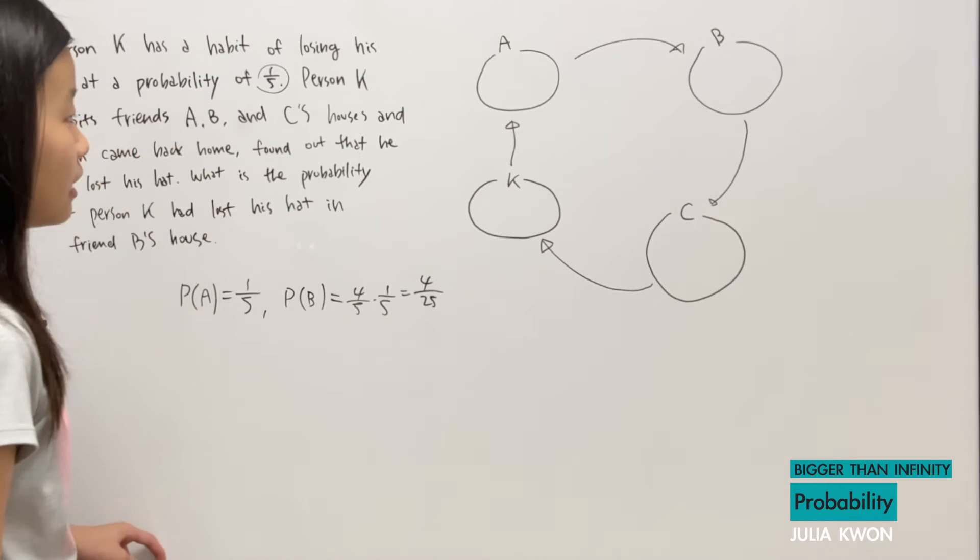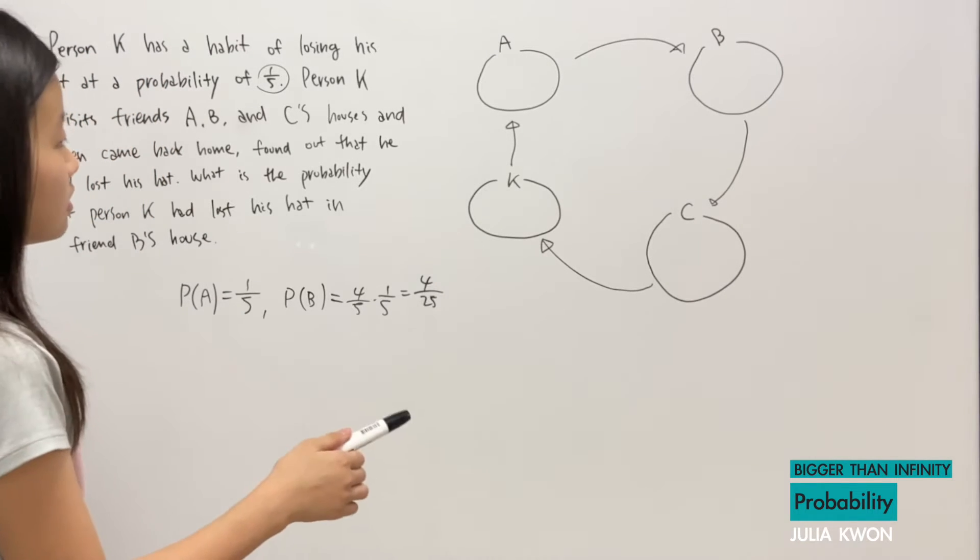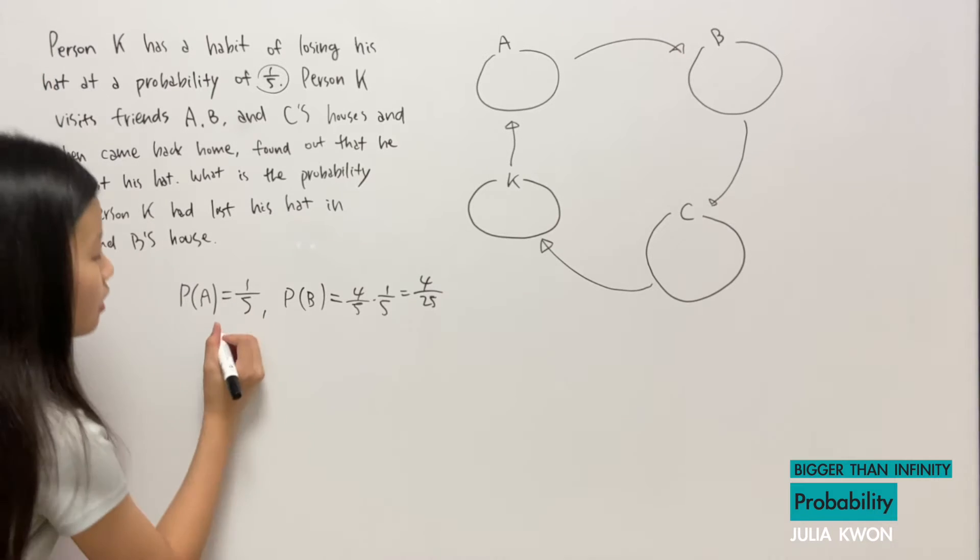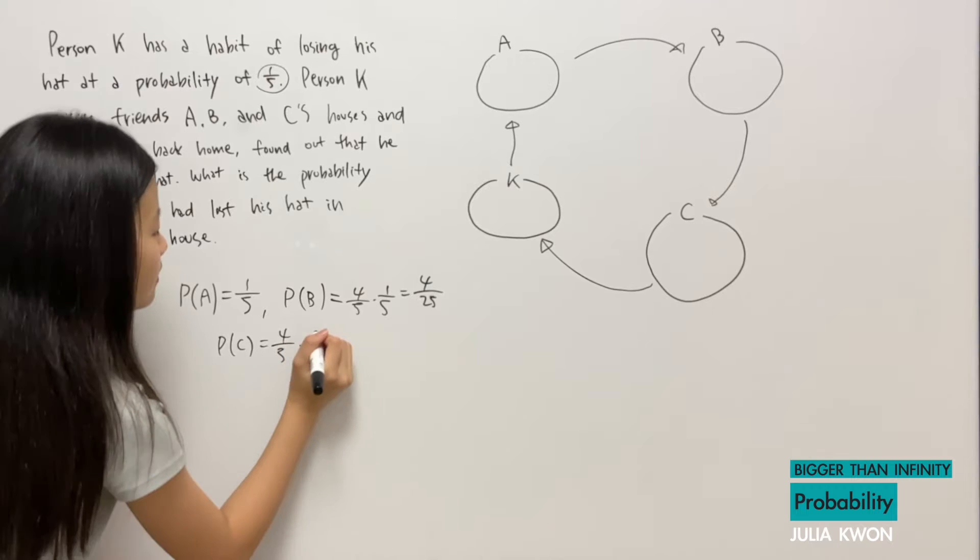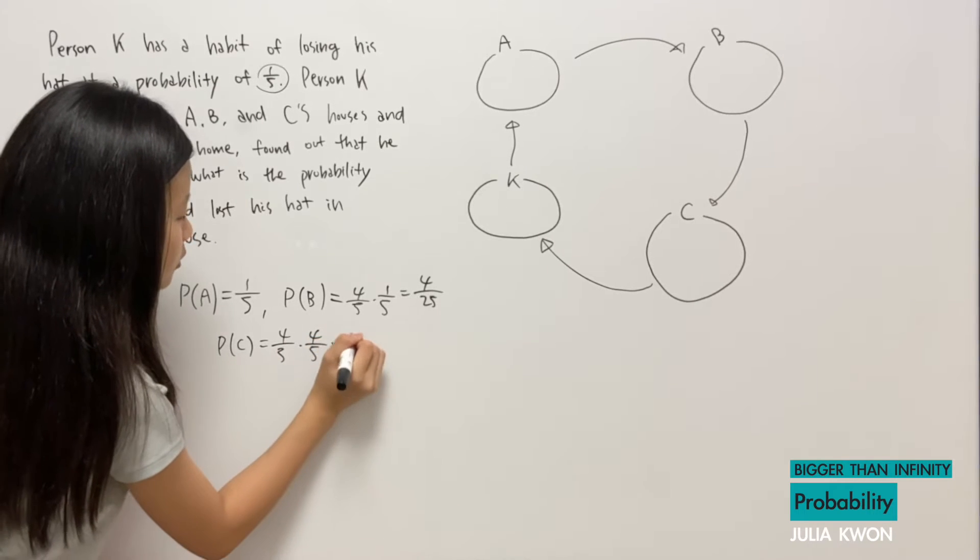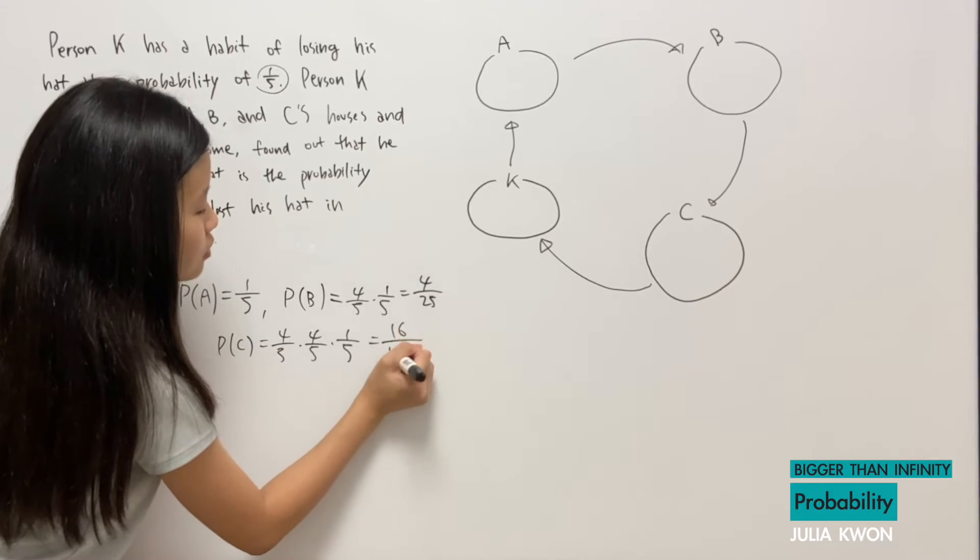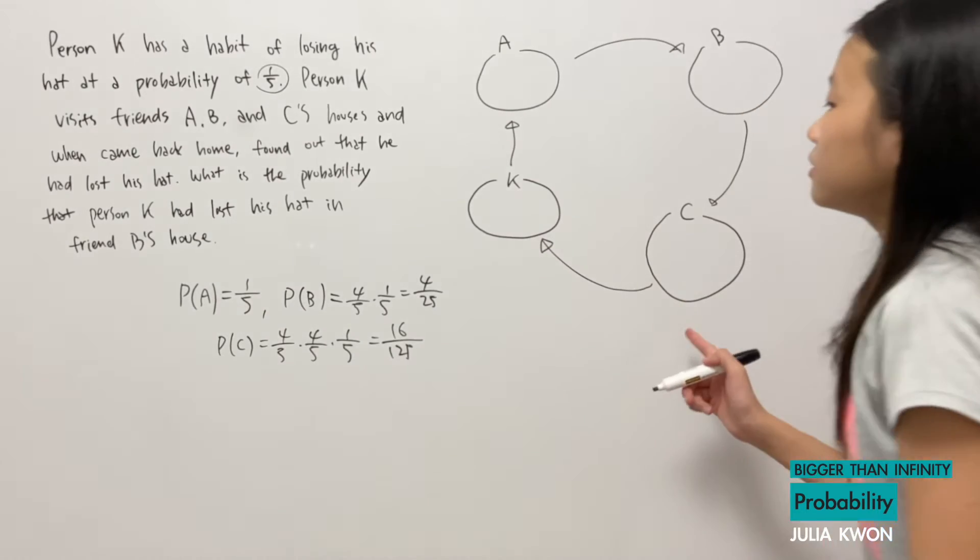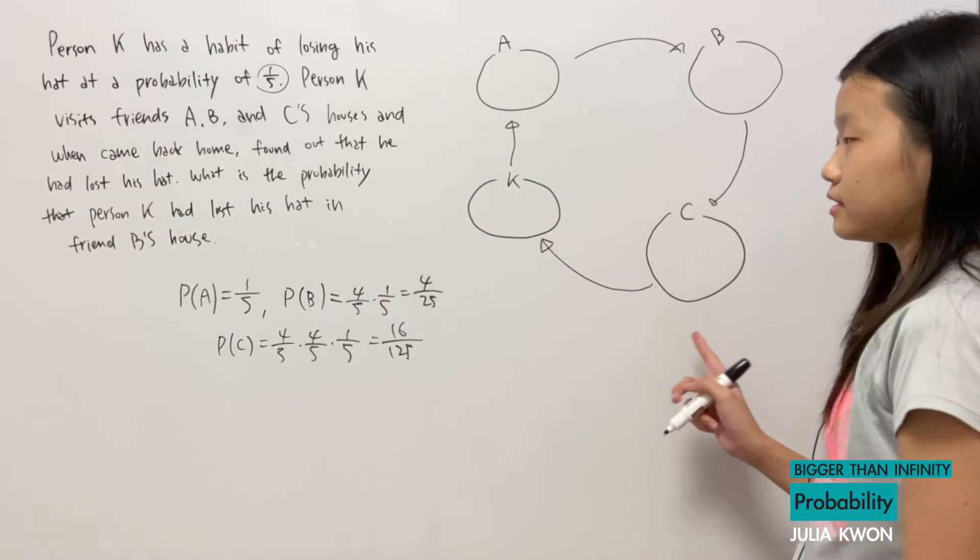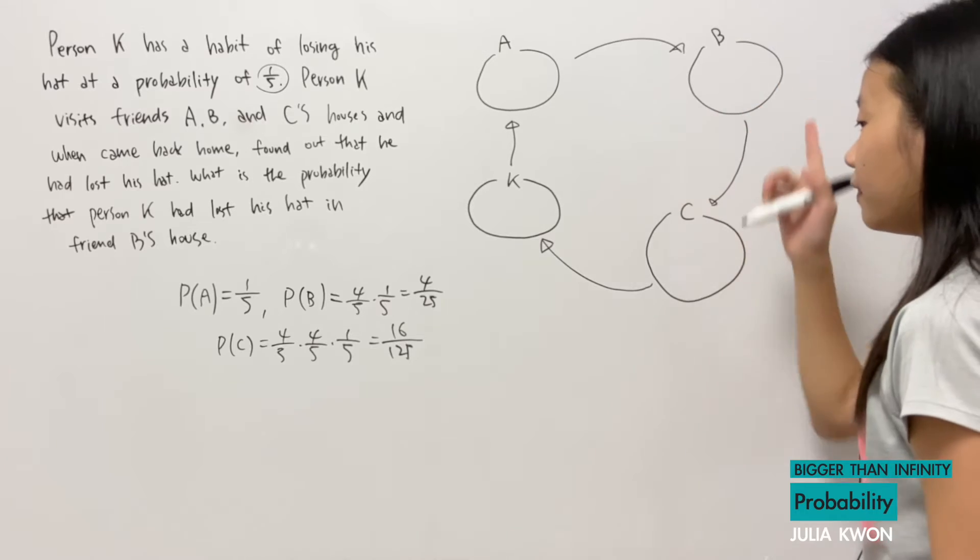And now the probability of losing his hat in house C would be 4/5 multiplied by 4/5 again, and then multiplied by 1/5. This is equal to 16/125. And again, for him to lose his hat in house C, he remembers his hat, remembers his hat again, and then loses his hat.